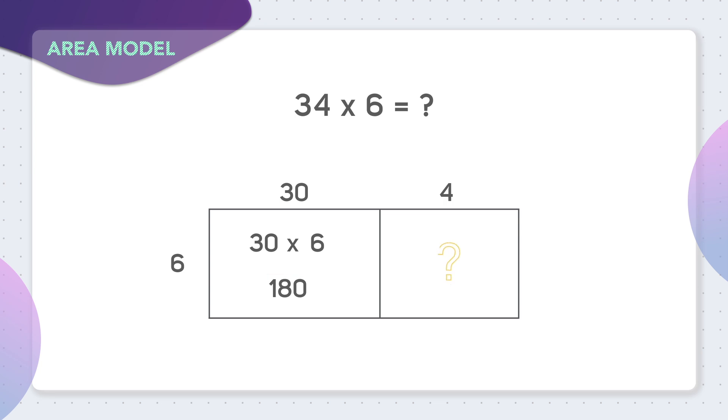Next, what should we multiply in this box on the right? In this box, we're multiplying 4 times 6. What does 4 times 6 equal? 4 times 6 is a multiplication fact you should know. 4 times 6 is 24.